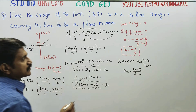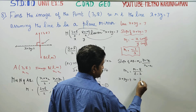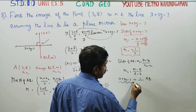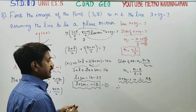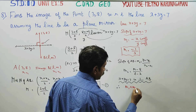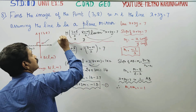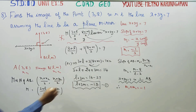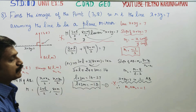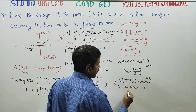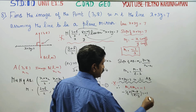Since x plus 3y equals 7 is perpendicular to AB, we use the key concept: m1 times m2 equals minus 1. Substituting m1 equals minus 1 by 3, and m2 equals (M minus 8) by (L minus 3), we get: minus 1 by 3 times (M minus 8) by (L minus 3) equals minus 1.